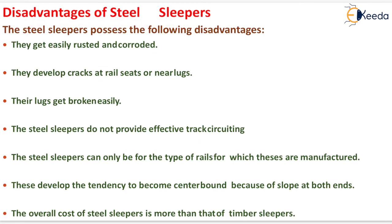Disadvantages of steel sleepers: they get easily rusted and corroded, develop cracks at rail seats or near lugs, and their lugs get broken easily. They do not provide effective track circuiting. They can only be used for the type of rails for which they are manufactured. They develop a tendency to become center-bound because of slope at both ends. The overall cost of steel sleepers is more than that of timber sleepers.